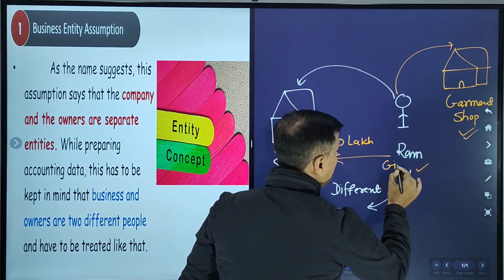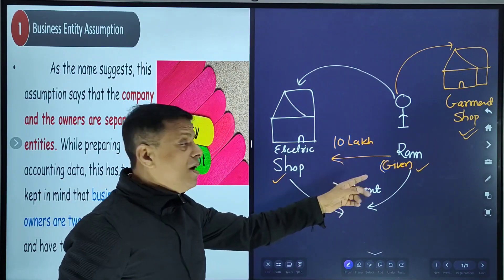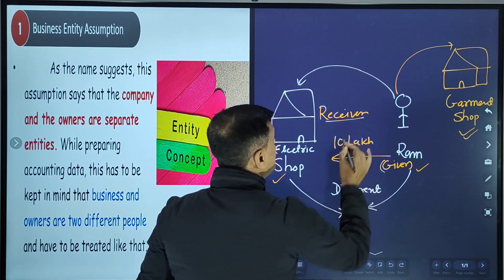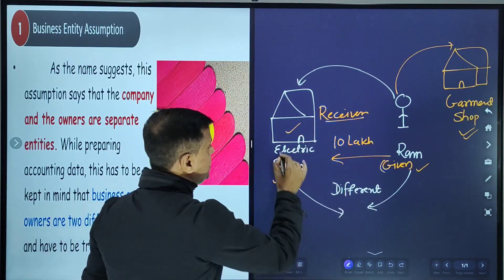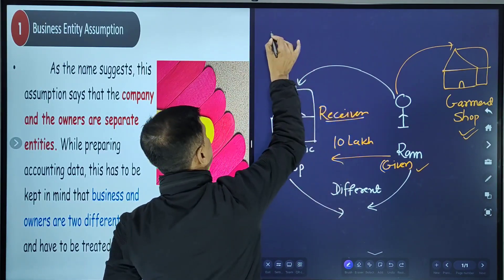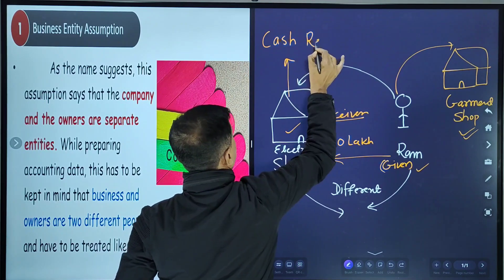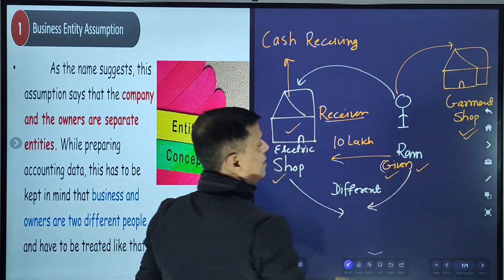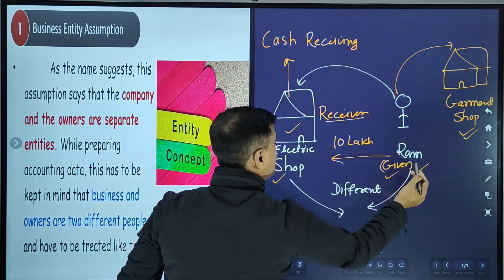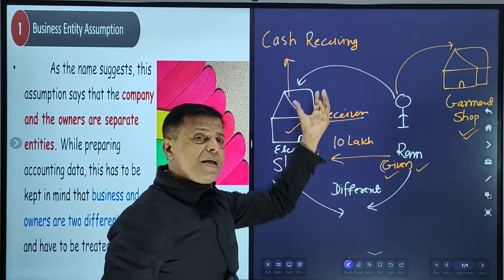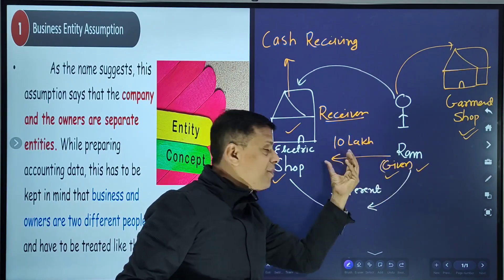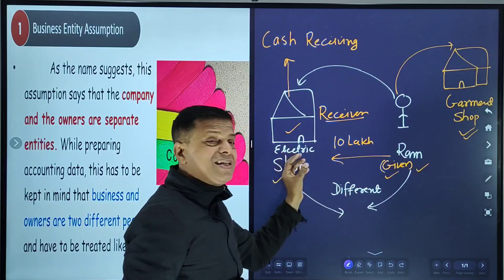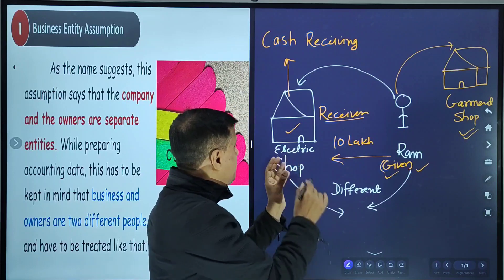Suppose Ram invests Rs. 10 lakhs into the electric supply business. Ram is the giver of capital and the business — electric supply — is the receiver of this money. So the journal entry will be: Cash Account debit, to Ram's Capital Account. Ram is the giver and owner, so the business has a liability to pay this capital back to Ram.